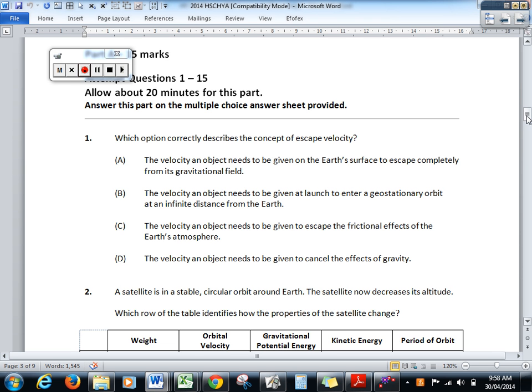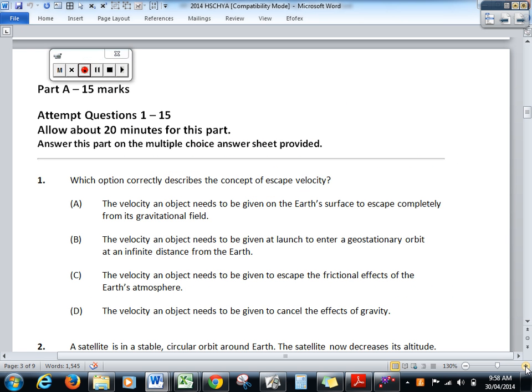There should be at least one distractor here that you can get rid of quite quickly. Let's have a look at D as the most ridiculous distractor. The velocity of an object needs to be given to cancel the effects of gravity. Can gravity be cancelled by anything? No. It's an inherent force within the universe. You can't undo gravity. There is no such thing as anti-gravity. Gravity exists. We have to overcome it at times if we want to leave the planet, but we can't cancel.